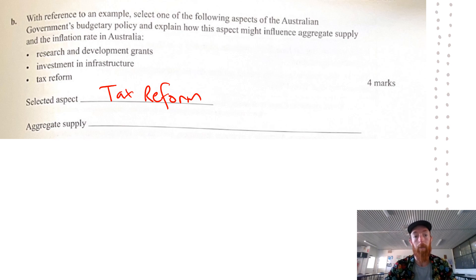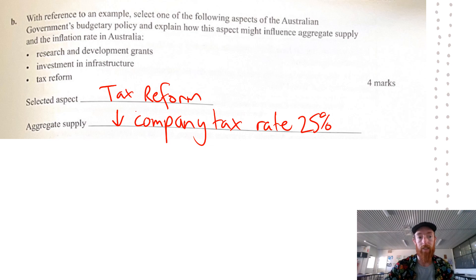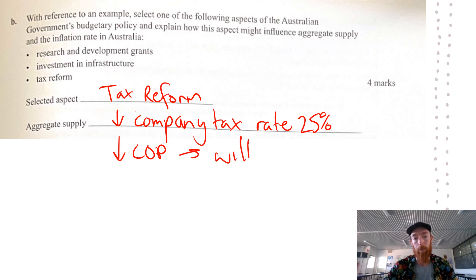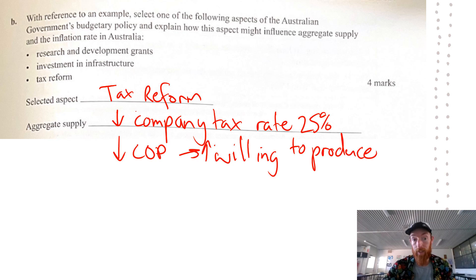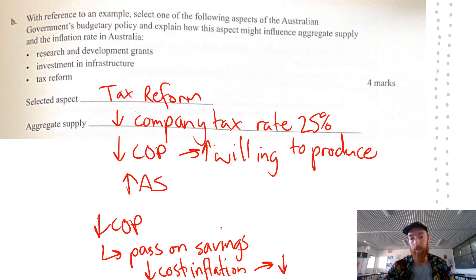For tax reform, describe it as any changes to the rate of taxes. If we talk about a decrease in the company tax rate for small and medium businesses to 25%, that's going to decrease the cost of production for businesses and make them more willing and able to produce, increasing aggregate supply. From an inflation perspective, that decreased cost of production means businesses can pass on savings through cheaper prices while still remaining profitable, decreasing cost inflationary pressure and therefore the inflation rate. Two marks each, so hit those key points.